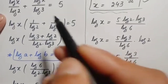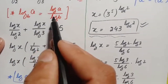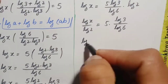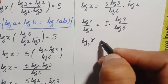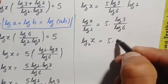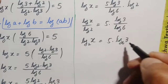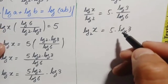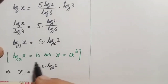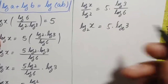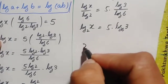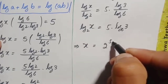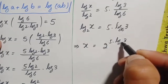Applying the change-of-base result to both sides, log of x divided by log of 2 becomes log of x with base 2, and log of 3 divided by log of 6 becomes log of 3 with base 6. So the equation becomes log of x with base 2 equals 5 times log of 3 with base 6. Converting from logarithm form to exponential form gives x equals 2 raised to the power of 5 times log base 6 of 3.